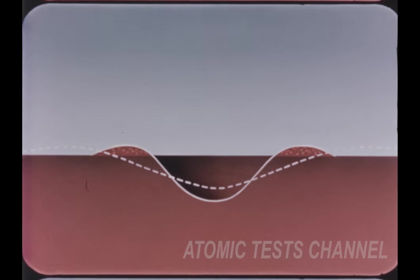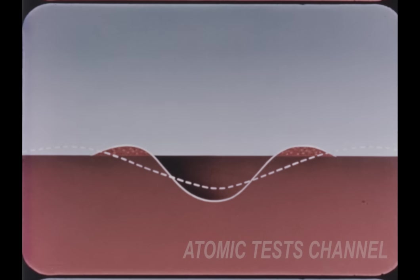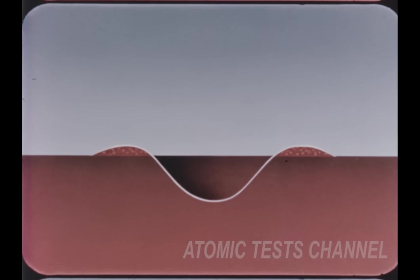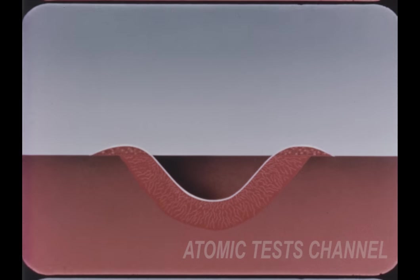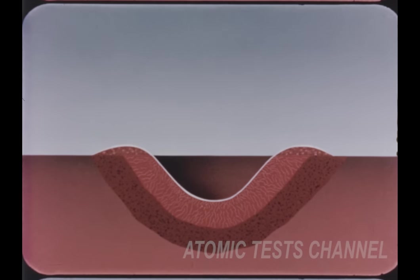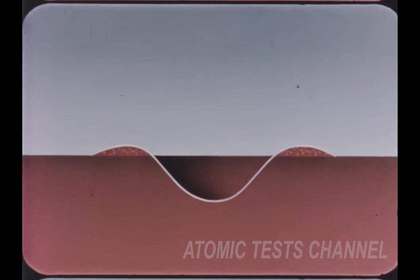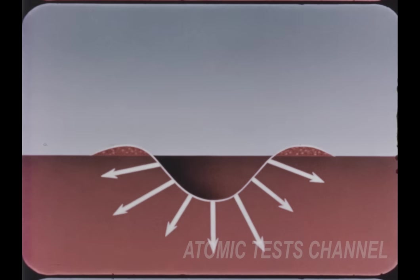Underground burst crater sizes are also affected by soil consistency. A burst in hard rock will slightly reduce both the depth and width of a crater from what it would be in dry soil. In saturated soil, however, the depth will be reduced, but the crater diameter is considerably increased. Underground bursts produce both a rupture zone and a plastic zone around the crater, as in the case of surface bursts, and will also produce a ground shock of the same general characteristics.